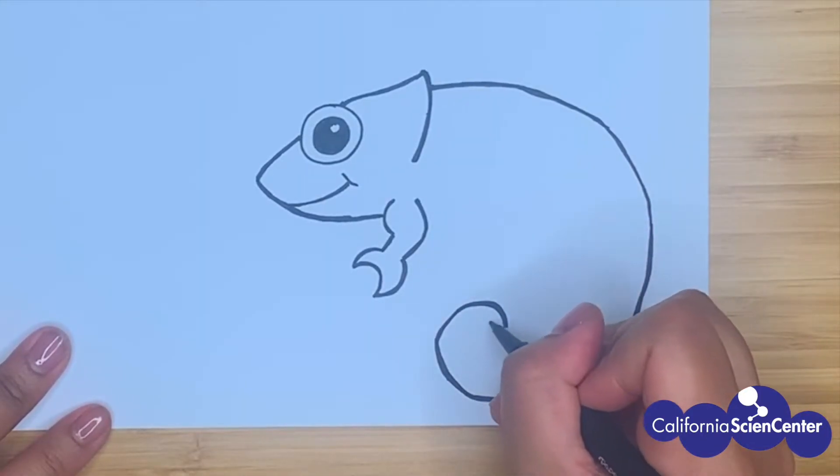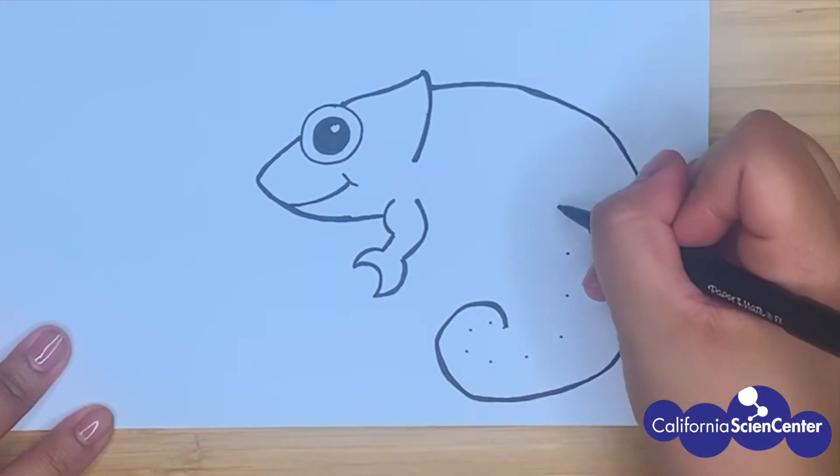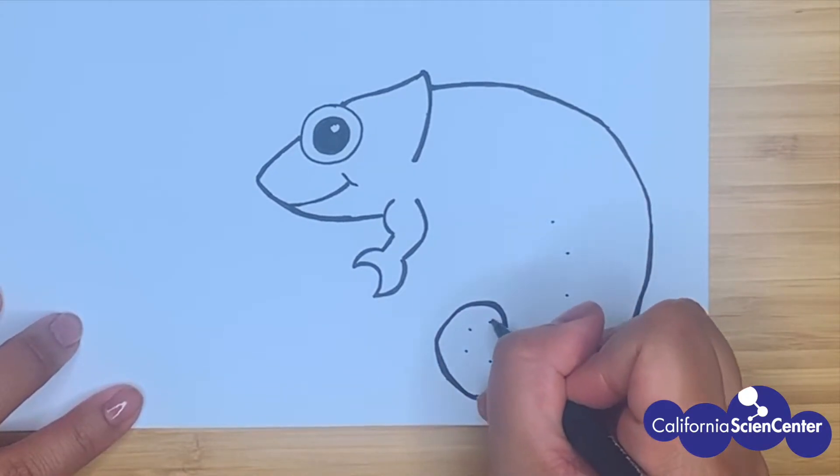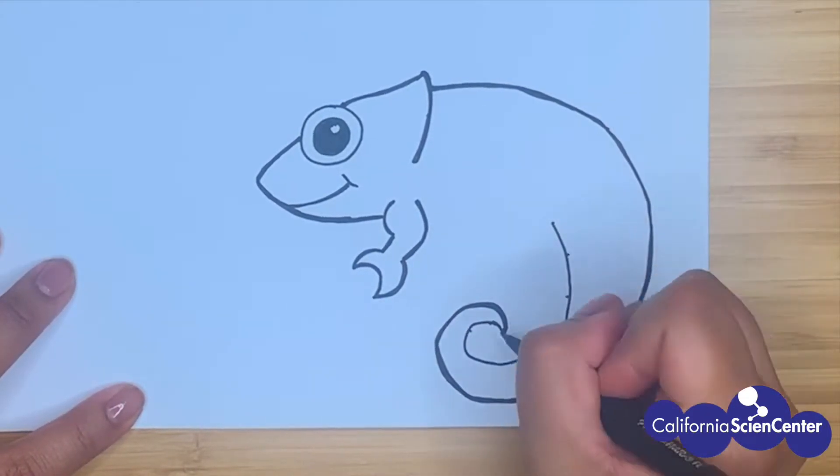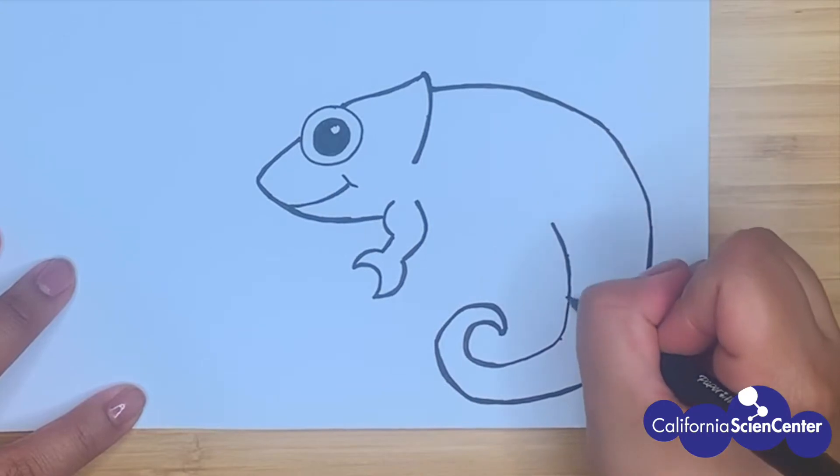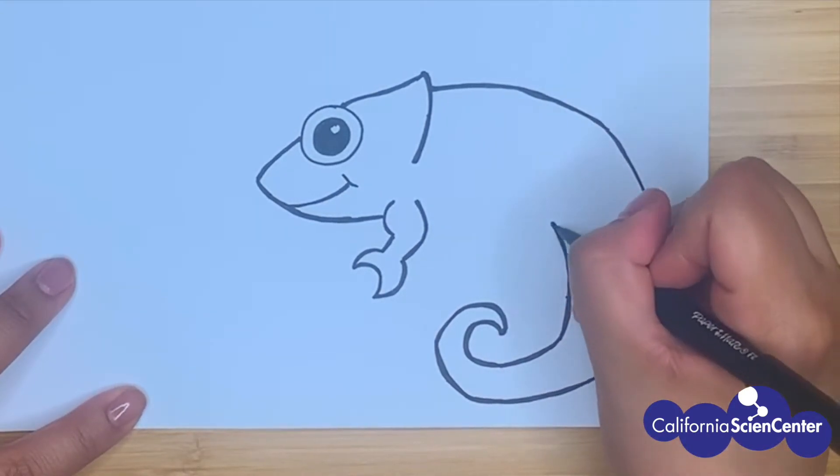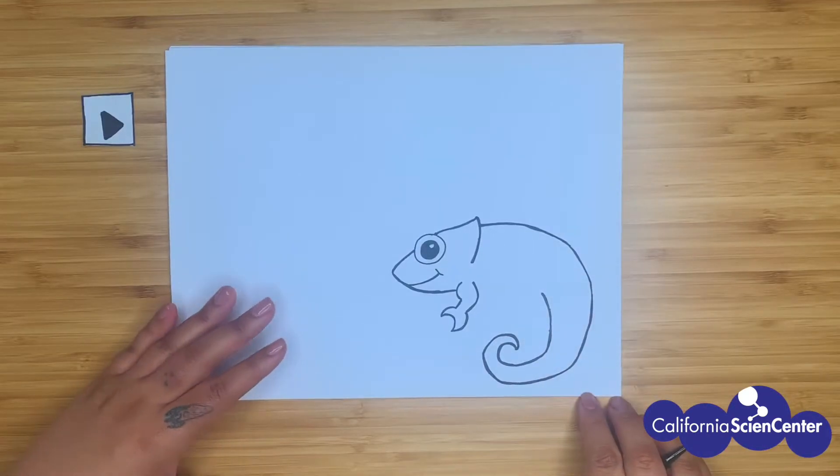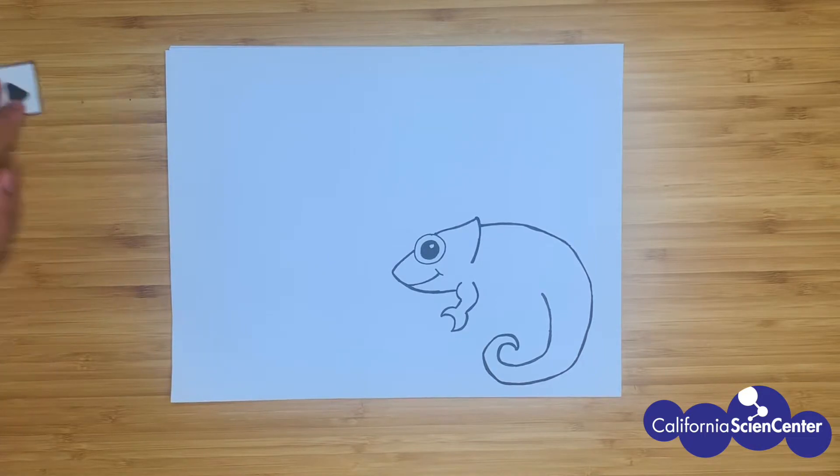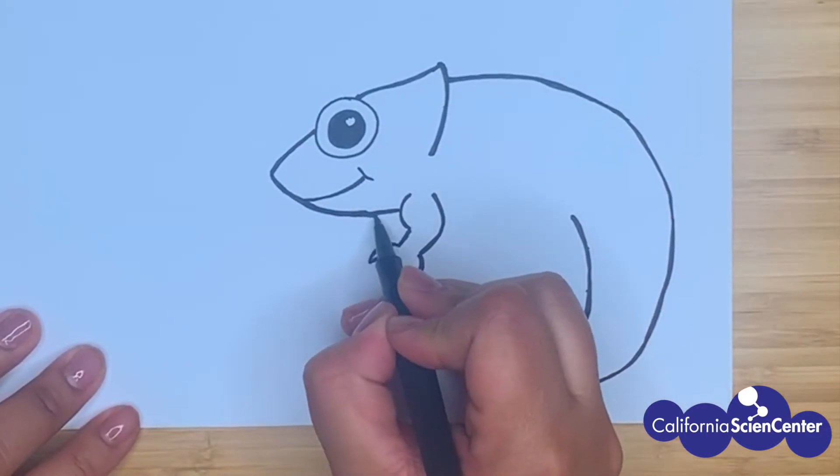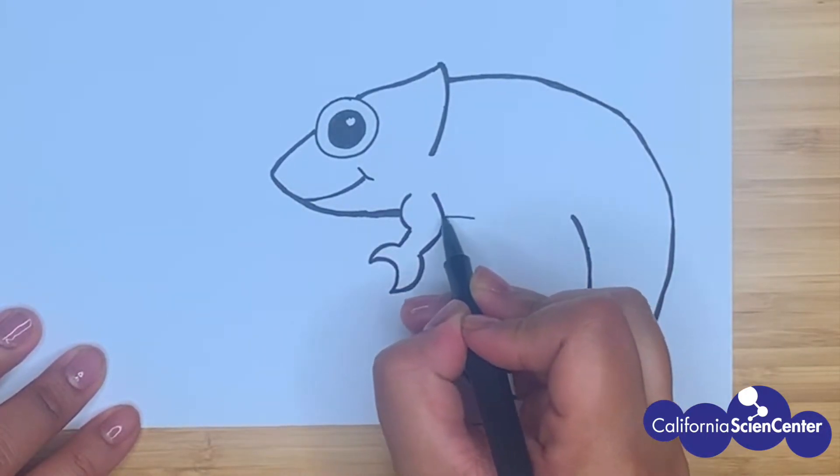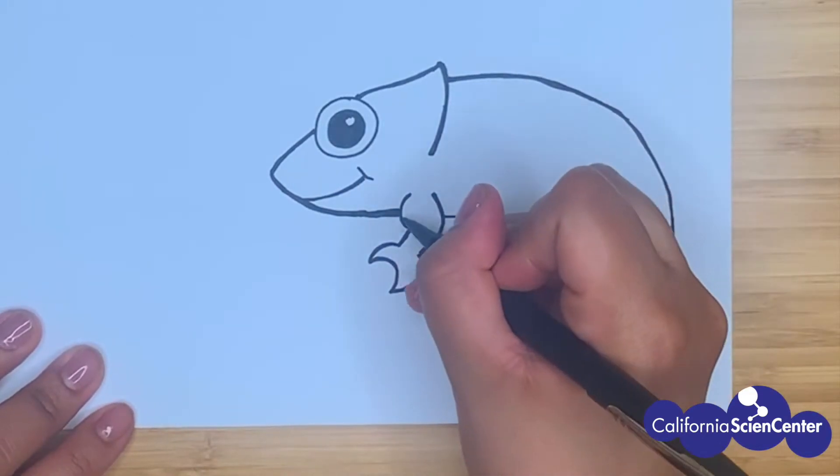Chameleons have a prehensile tail that helps them wrap around tree branches. Baby chameleon is learning to make sure to hang on tight as it explores the environment around it. I'm going to finish its body, making sure to use the line I already made to guide the way.